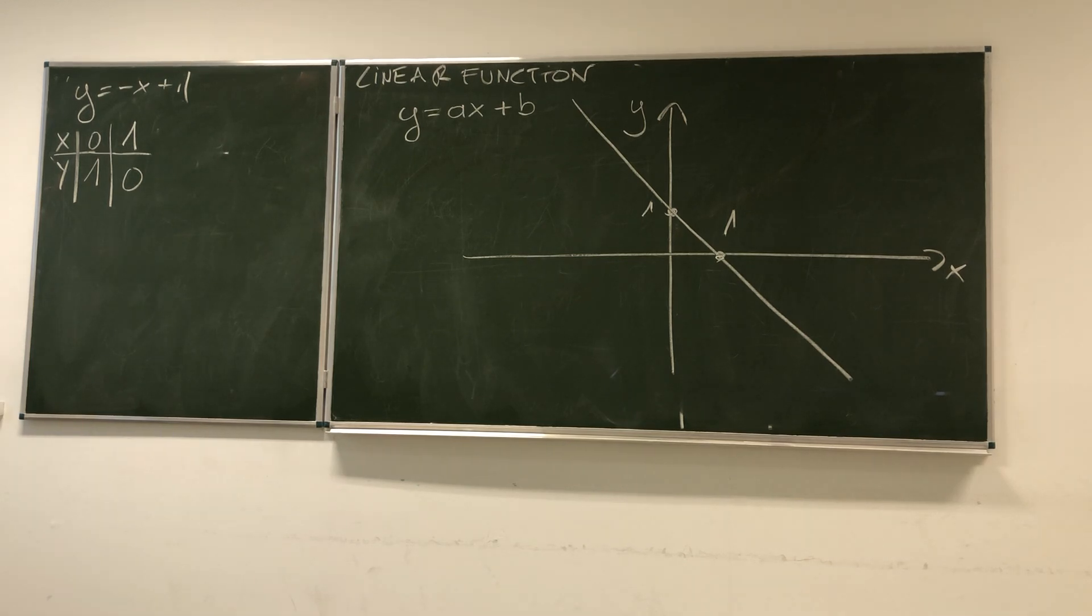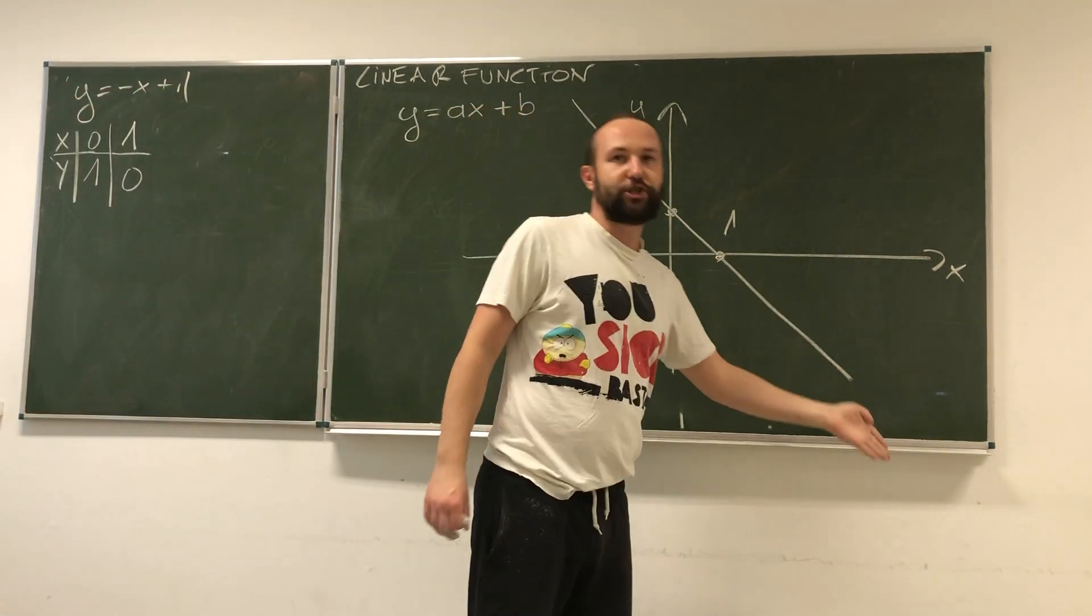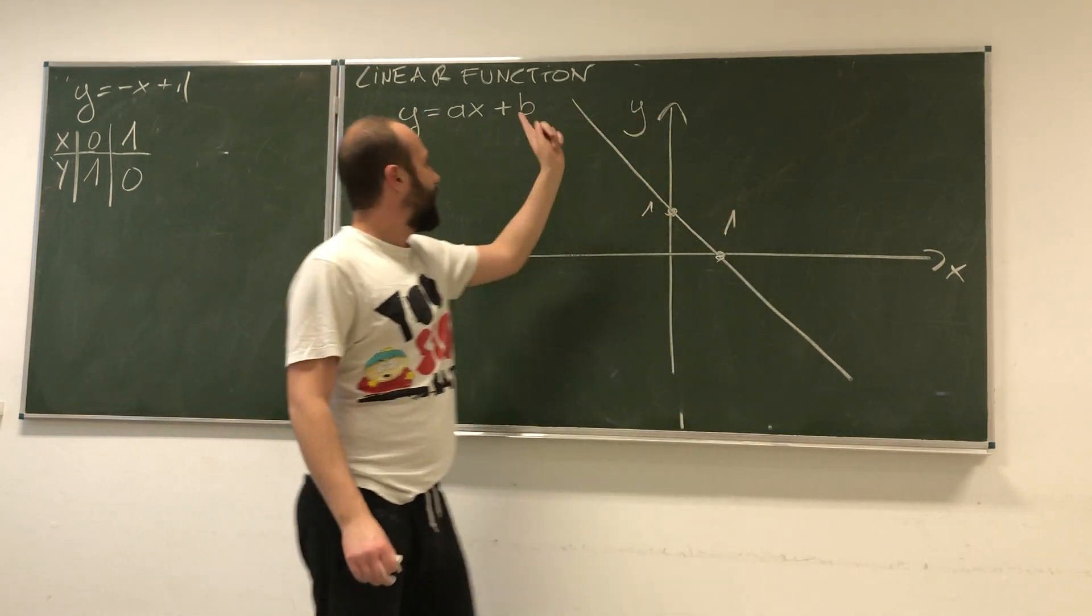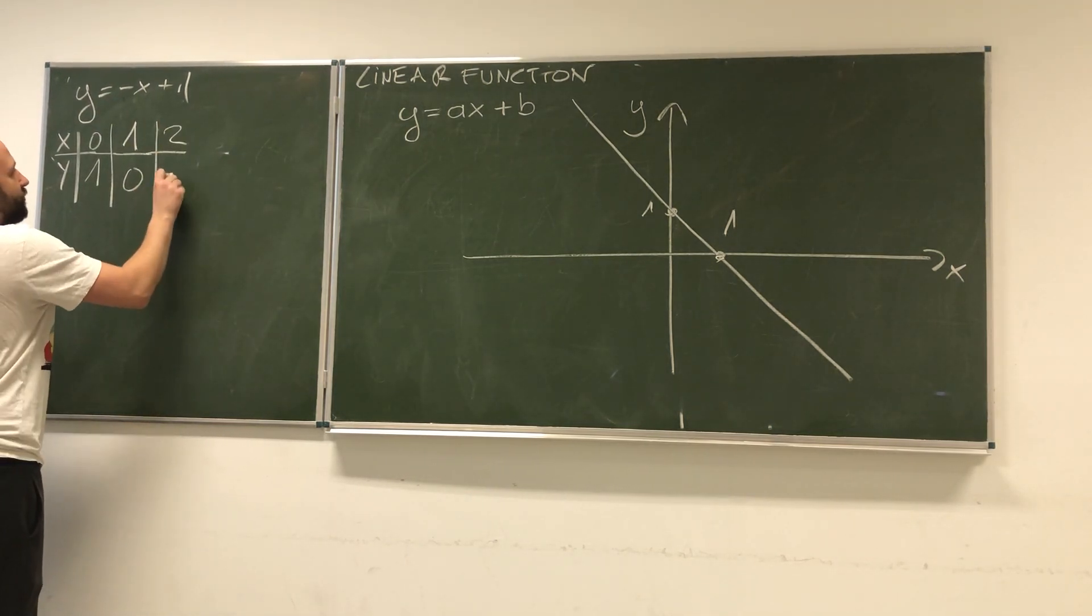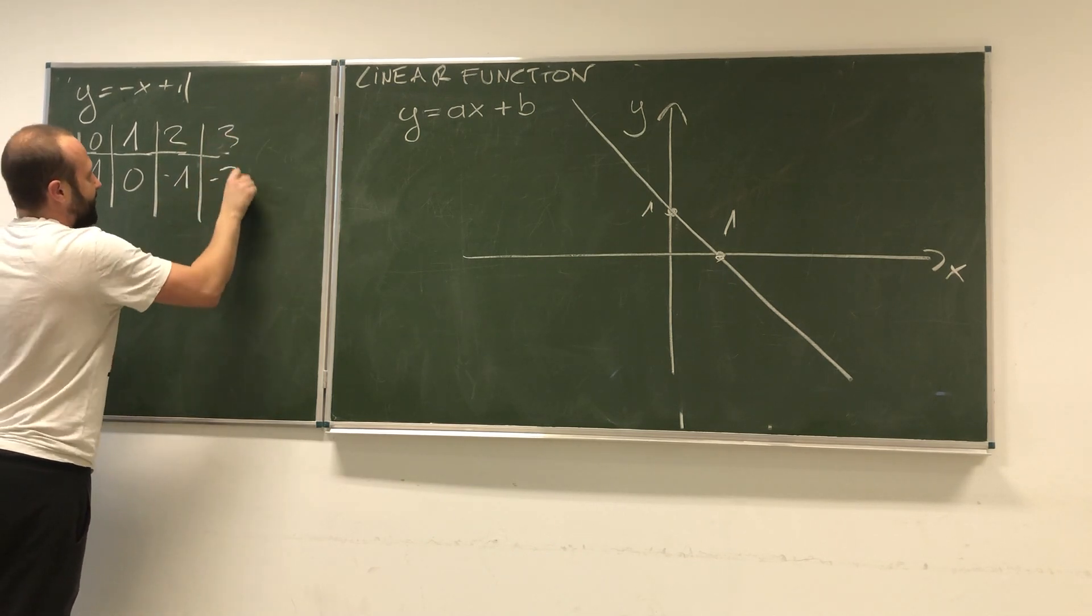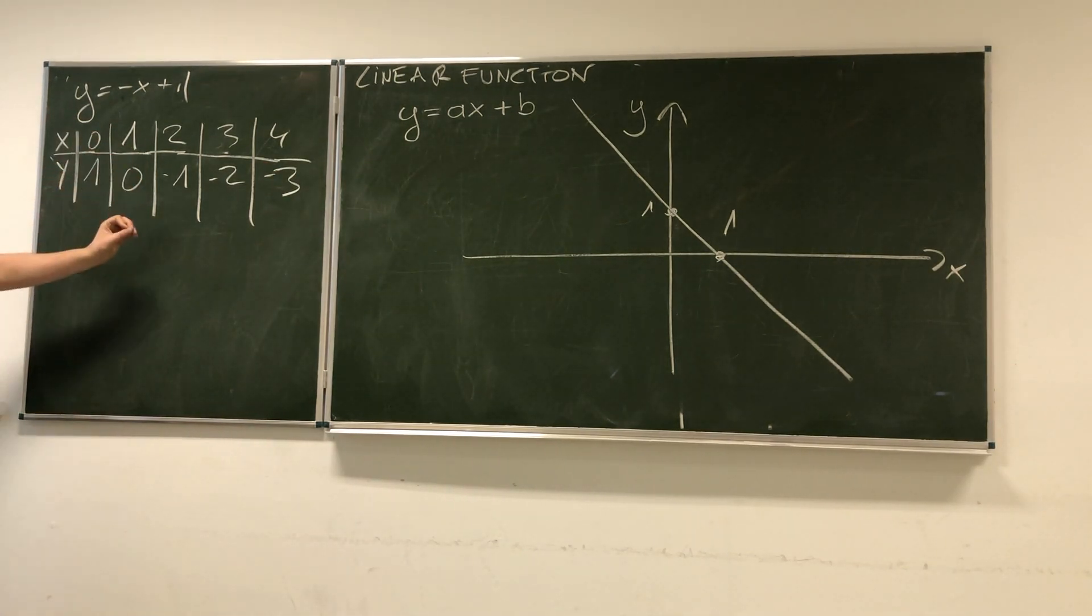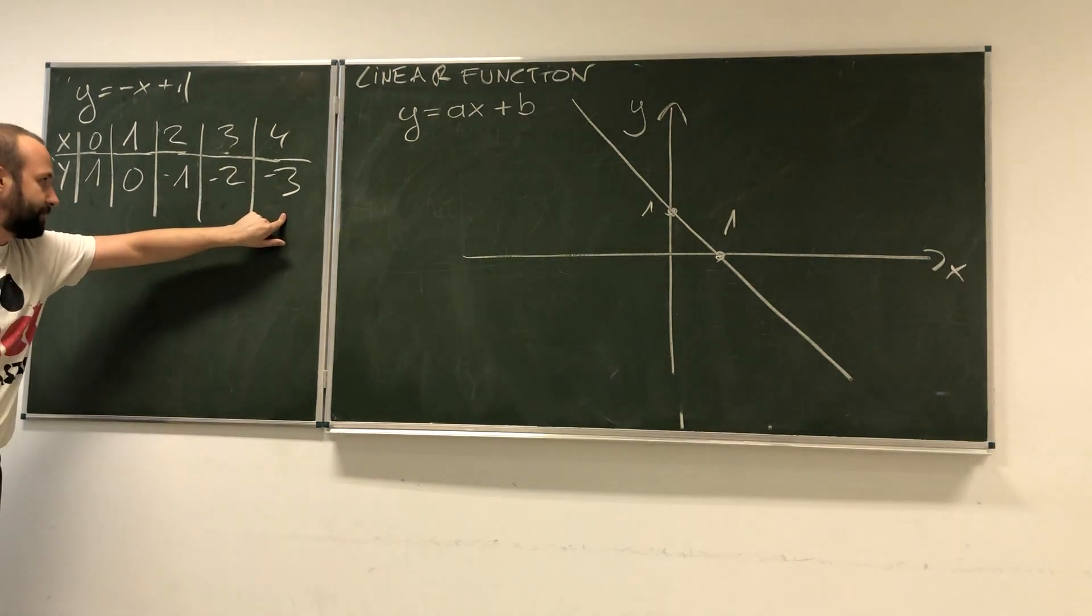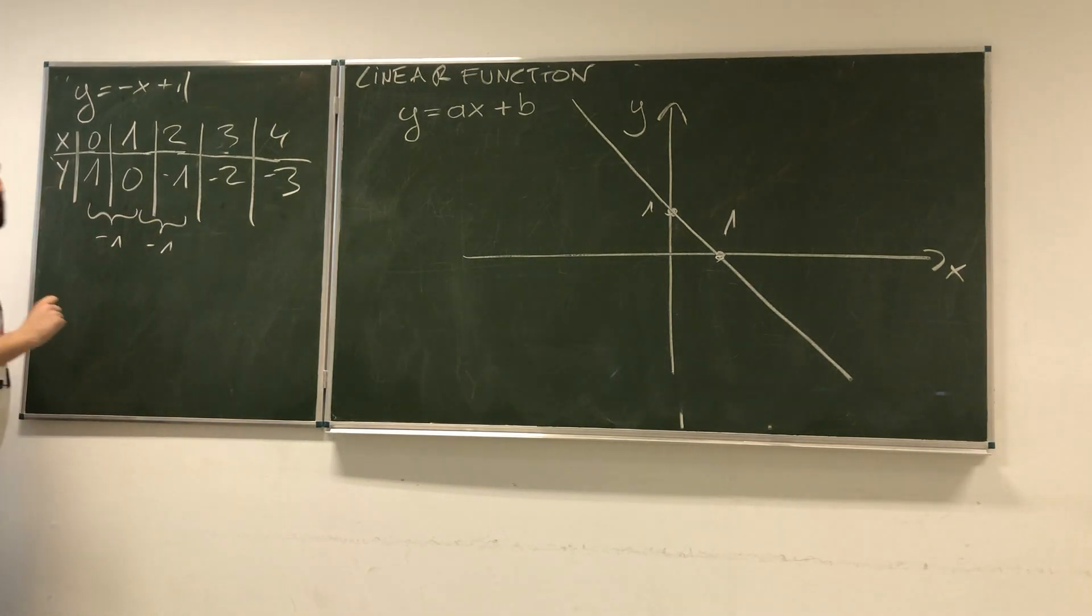The main difference between the one we had before and the one we have now is that this one is downward sloping, which means as x gets bigger, y gets lower. It makes perfect sense because we have minus in front of x. If x is 2, y is negative 1, then 3 gives negative 2, then 4 gives negative 3. The bigger the value of x, the lower the value of y. The value of y is always going down by 1 unit.